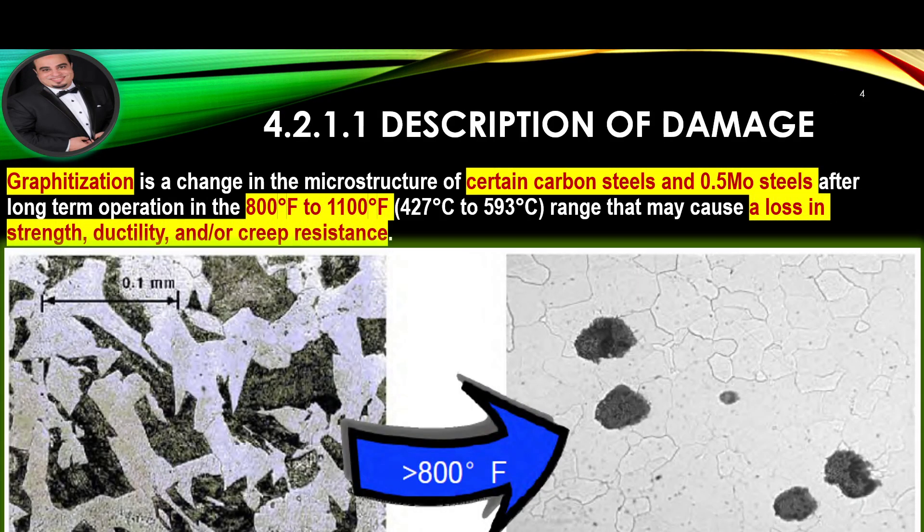Description of Damage: Graphitization is a change in the microstructure of certain carbon steels and half molybdenum steels after long-term operation in the 800°F to 1100°F range, that may cause a loss in strength, ductility, and/or creep resistance.